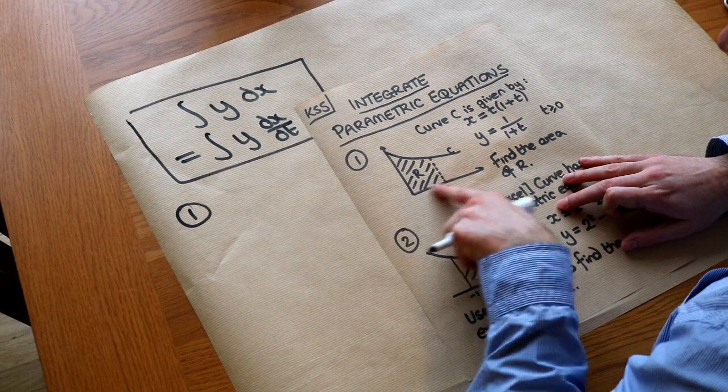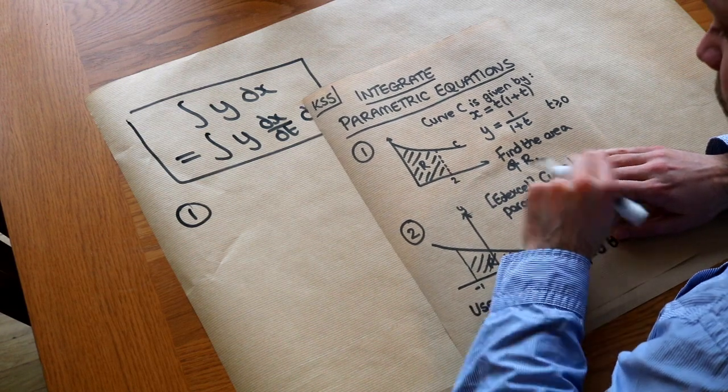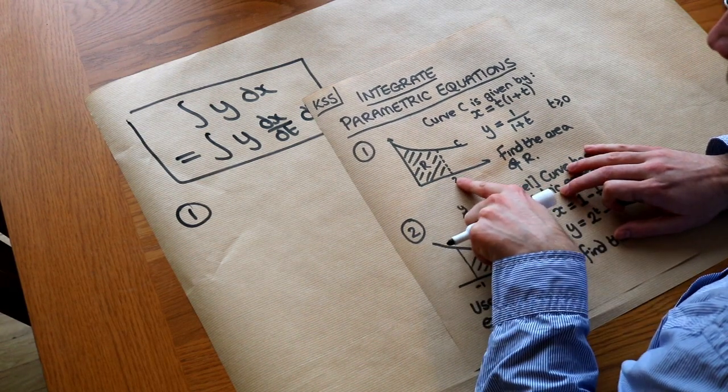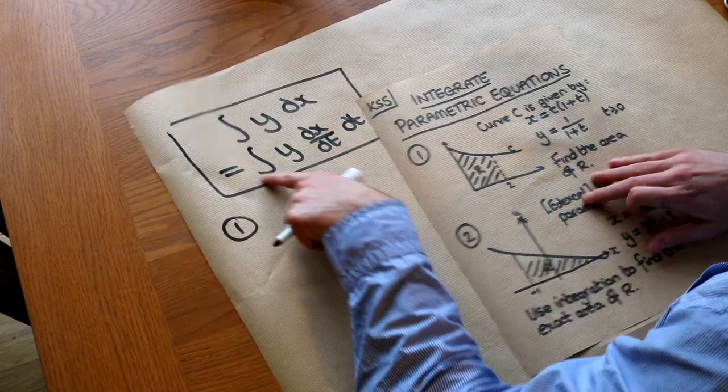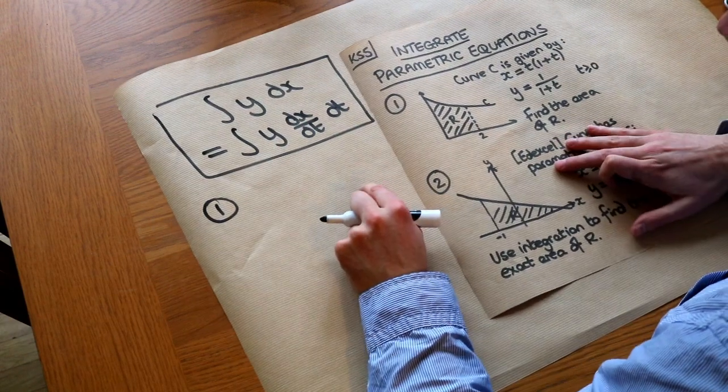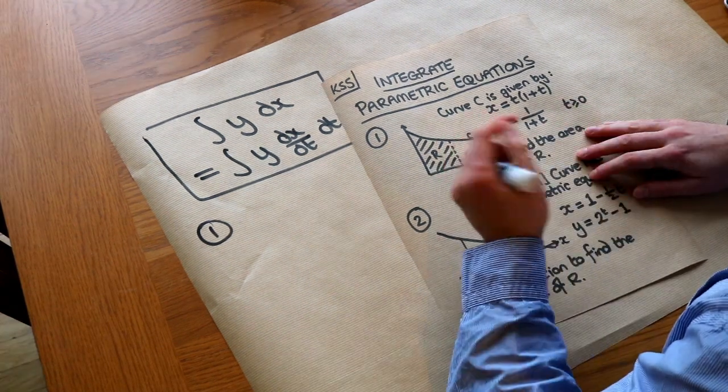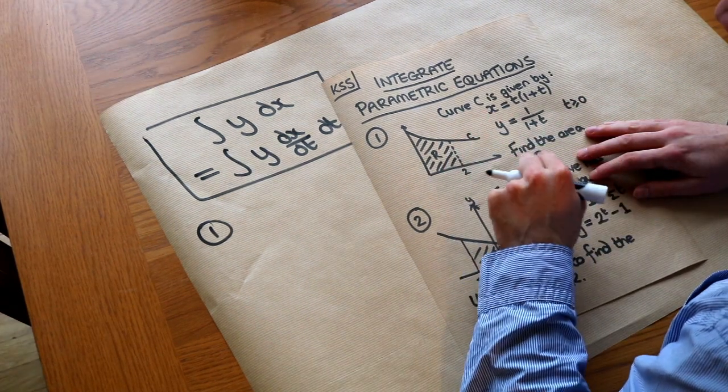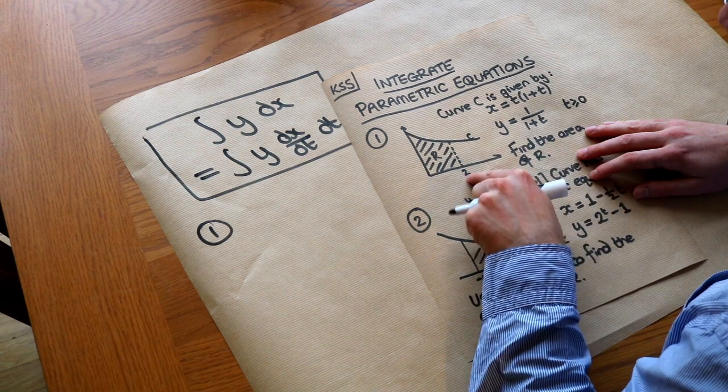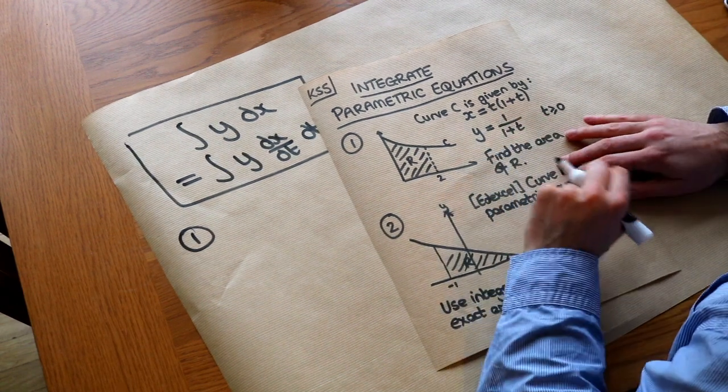Now we want to find the area under this curve here, so we're integrating between X is 0 and X is 2, and we want to use this formula here. Now firstly note that just like when we're integrating with a substitution, we need to make sure that our limits are in terms of T instead of in terms of X, because we're going to be integrating with respect to T.